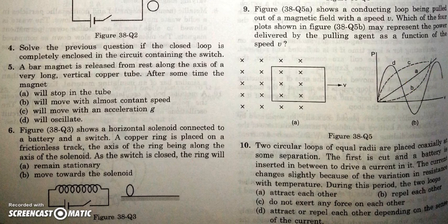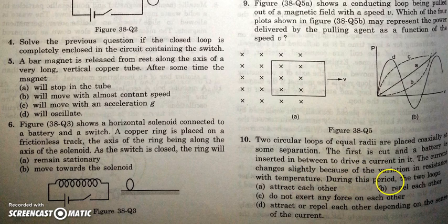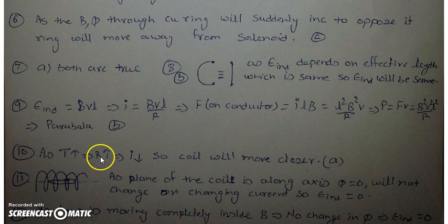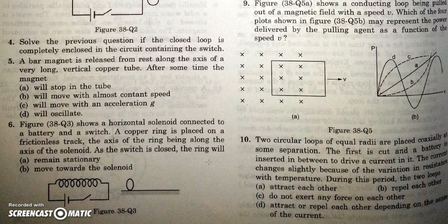In the next question, two circular loops of equal radii are placed coaxially at some separation. The first loop has a cut with a battery inserted. Due to Joule heating, the temperature of the wire increases with time, so the resistance increases, and the current in the loop decreases. When the current decreases, by Lenz's law the coil tries to maintain the flux by moving closer, so the two loops will attract each other.